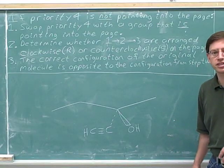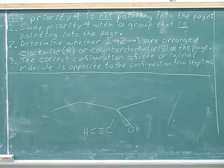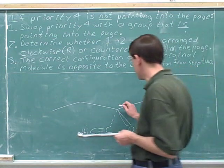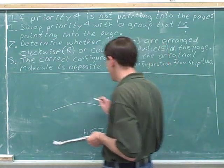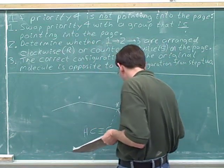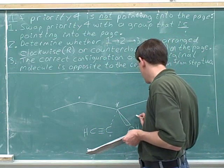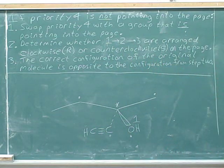Determine the configuration of this stereocenter. I'll mark the stereocenter with an asterisk. We'll dot the four directly connected atoms. The oxygen gets the top priority, number one. But then we have three carbons that are tied.